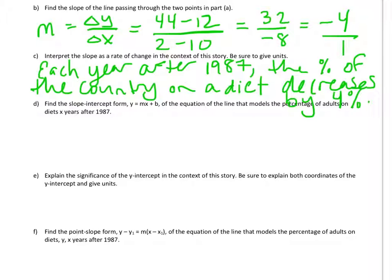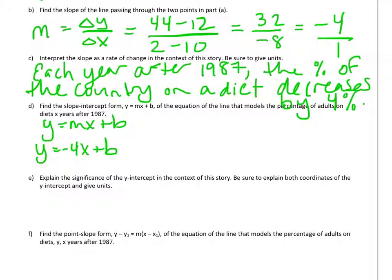All right, so I want to find the slope intercept form of the equation of the line. So I now know its slope. So if I'm looking at y equals mx plus b as the slope intercept form of the line, I can replace the m with a negative 4. And the only piece of information I still need to find is b. y and x stay in the equation. So I just have to figure out what b is. And I can figure out what b is by using one of the points that I was initially given. You can pick any point that's on the line. I'm going to use 10, 12.